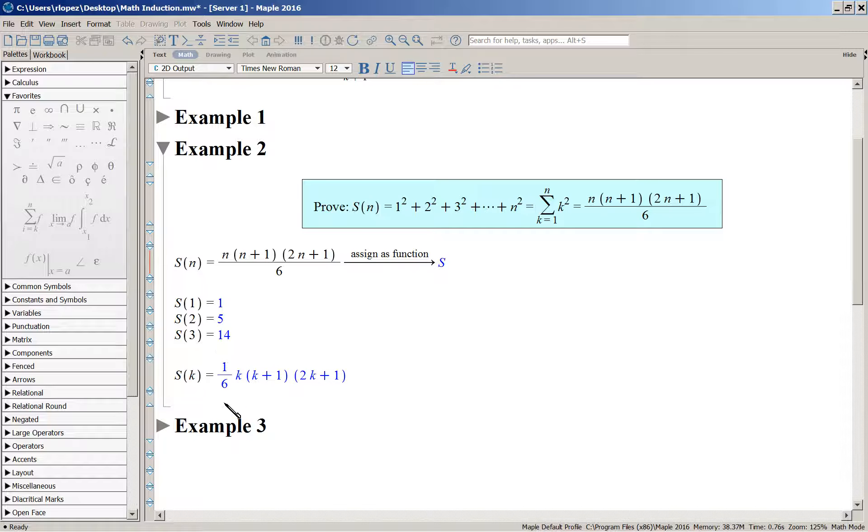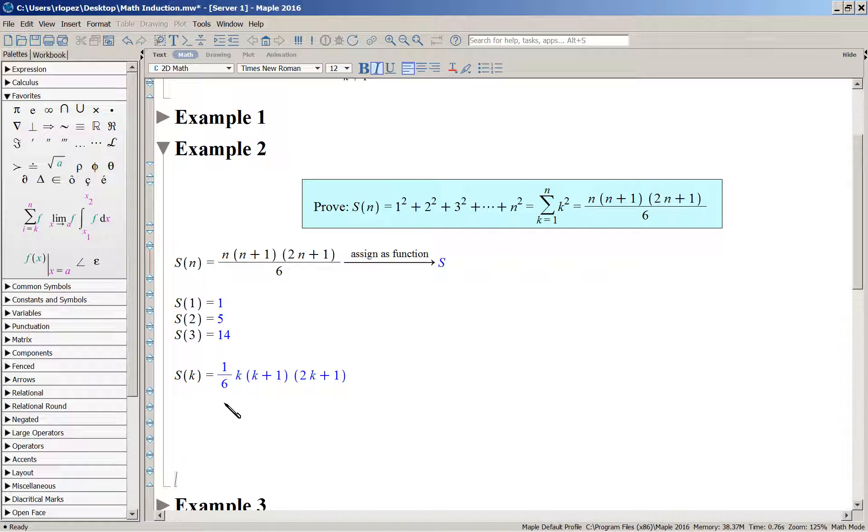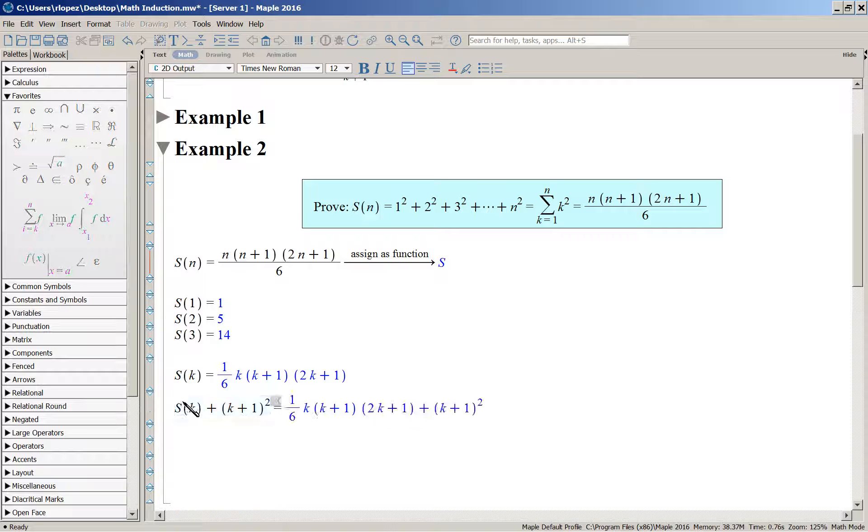And to that, you want to add the next term. So S of K plus, what is the next term? It's K plus one, but that's squared. And what will that equal? Well, there's your one-sixth of K, K plus one, two K plus one, and there's your K plus one squared.